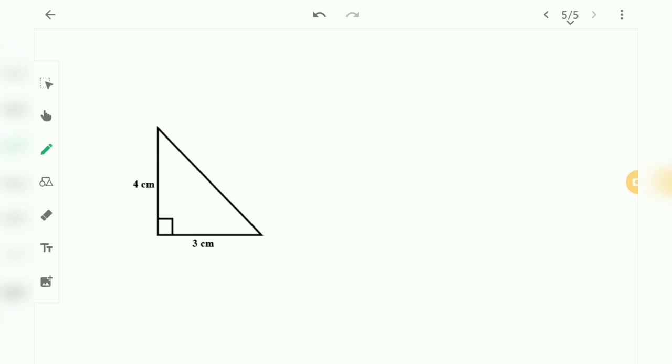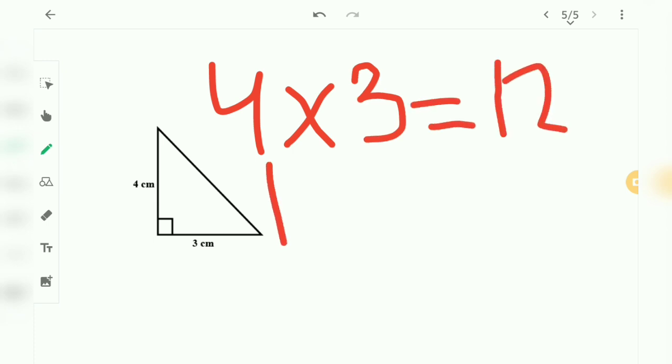The next question is we need to find the area of triangle again here, and this is a right-angled triangle. So we can see that we have the height of 4 and this is a 3. That's easy. 4 into 3 equals to 12. 12 divided by 2 equals to 6 cm squared.